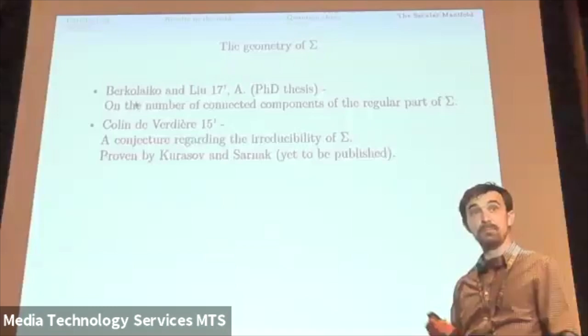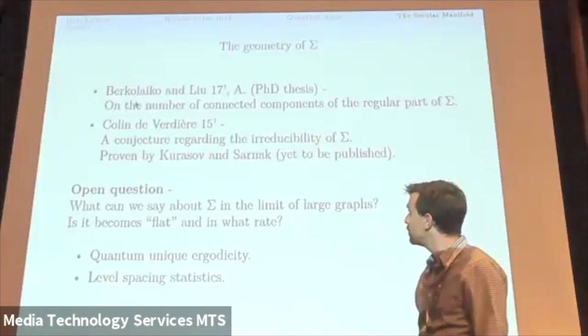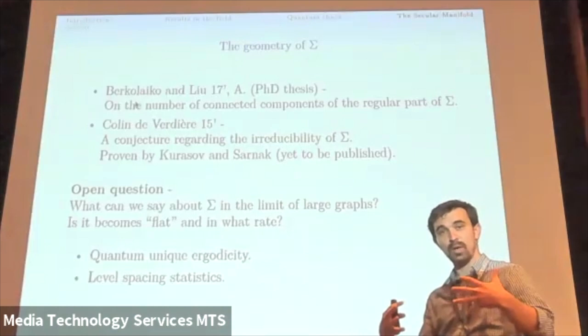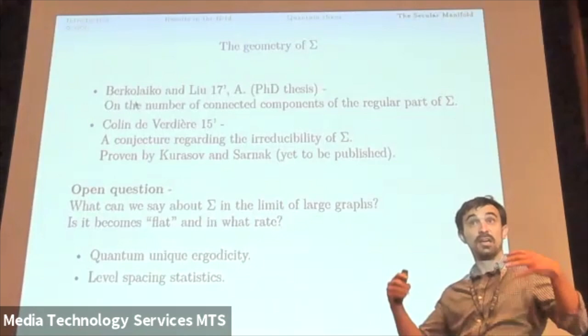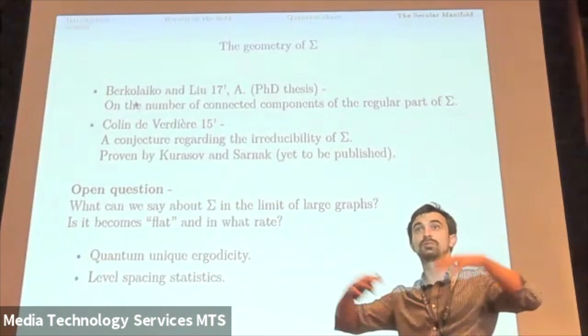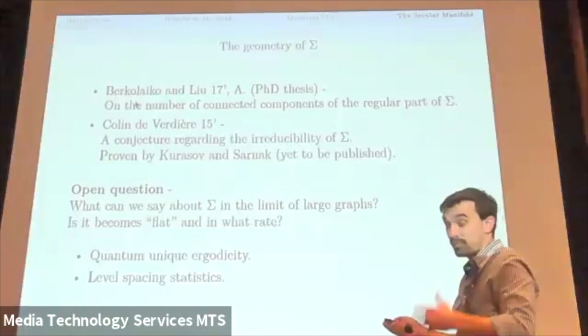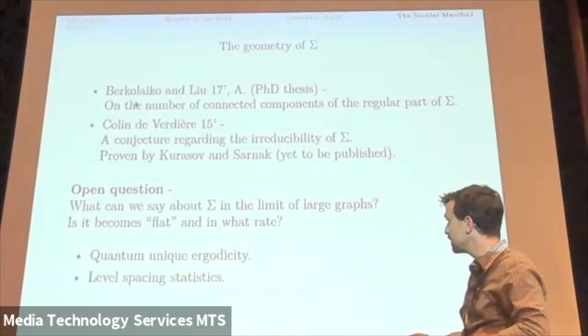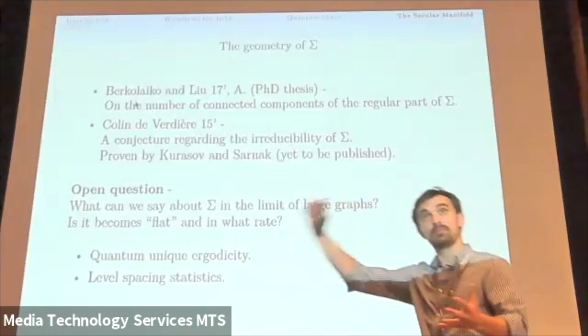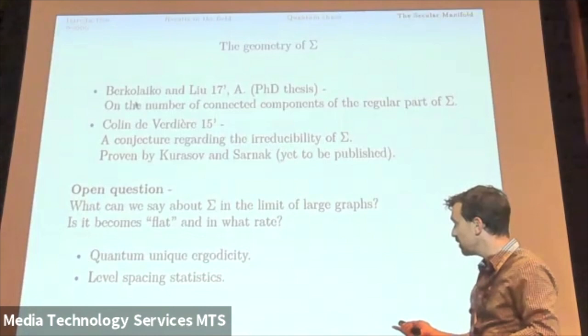And the open question, which I intend to deal with, is what happens to sigma? What can we say geometrically about sigma in the limit of large graphs? So that's in the limit where the dimension of this manifold and this torus go to infinity. And we believe that it's going to become flat. It's going to become a bunch of hyperplanes. And the question is whether it is true and in what rate it's going to become flat. And these questions may give an answer from the spectral side to questions regarding quantum unique ergodicity and level spacing statistics.